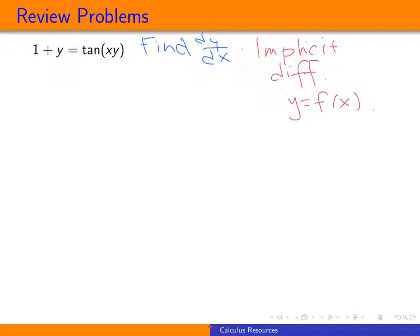So now, back to the problem. We'll take d dx of both sides. So we want d dx of 1 plus y, and that'll be d dx of the tangent of x times y. So we'll take the derivative of both sides, and that equality will remain true.